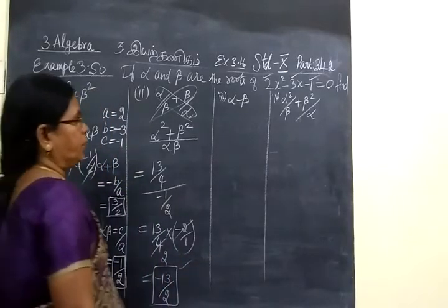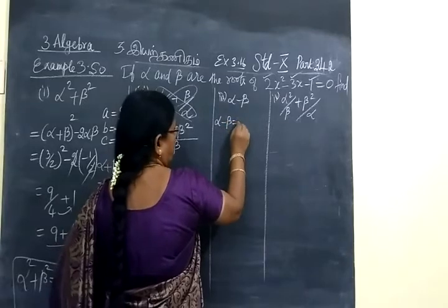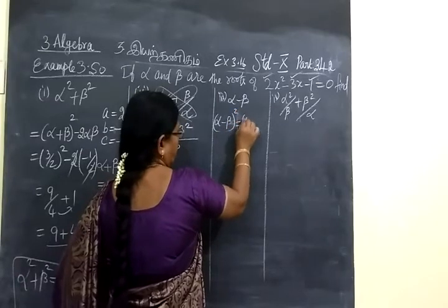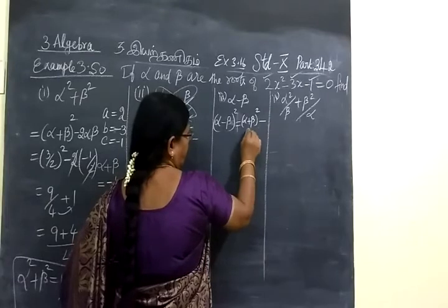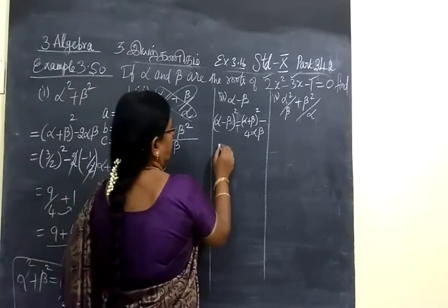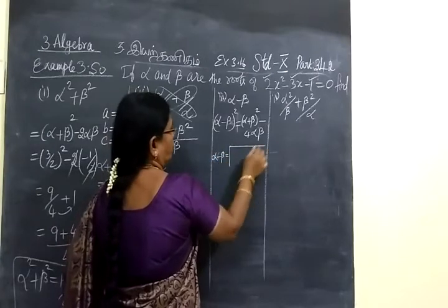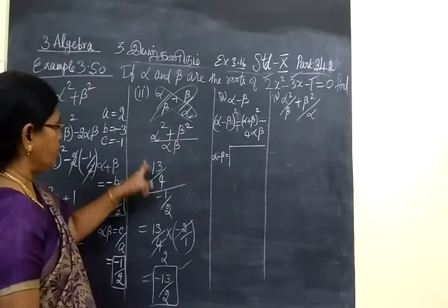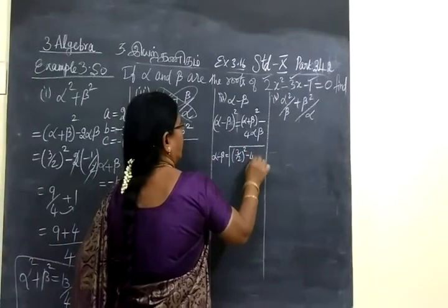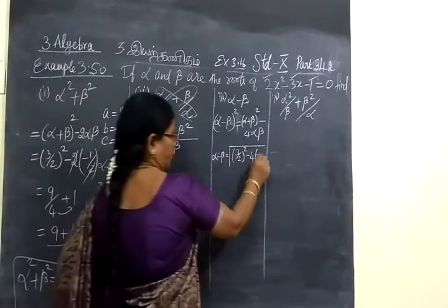Now come to the third one: alpha minus beta. We have done this type of problem previously. The formula is: alpha minus beta whole squared equals alpha plus beta whole squared minus 4 alpha beta. We have seen this in the previous class. Now, take the root. Alpha minus beta equals root of alpha plus beta whole squared minus 4 alpha beta. Alpha plus beta is 3 by 2, and alpha beta is minus 1 by 2.